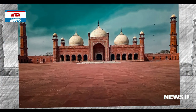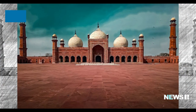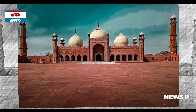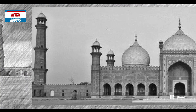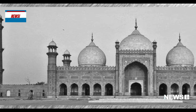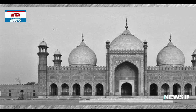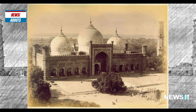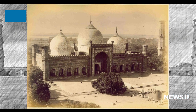The mosque's interior is equally impressive, featuring intricate tile work, frescoes, and plaster work. The prayer hall is flanked by four smaller halls, each of which is topped by a dome.